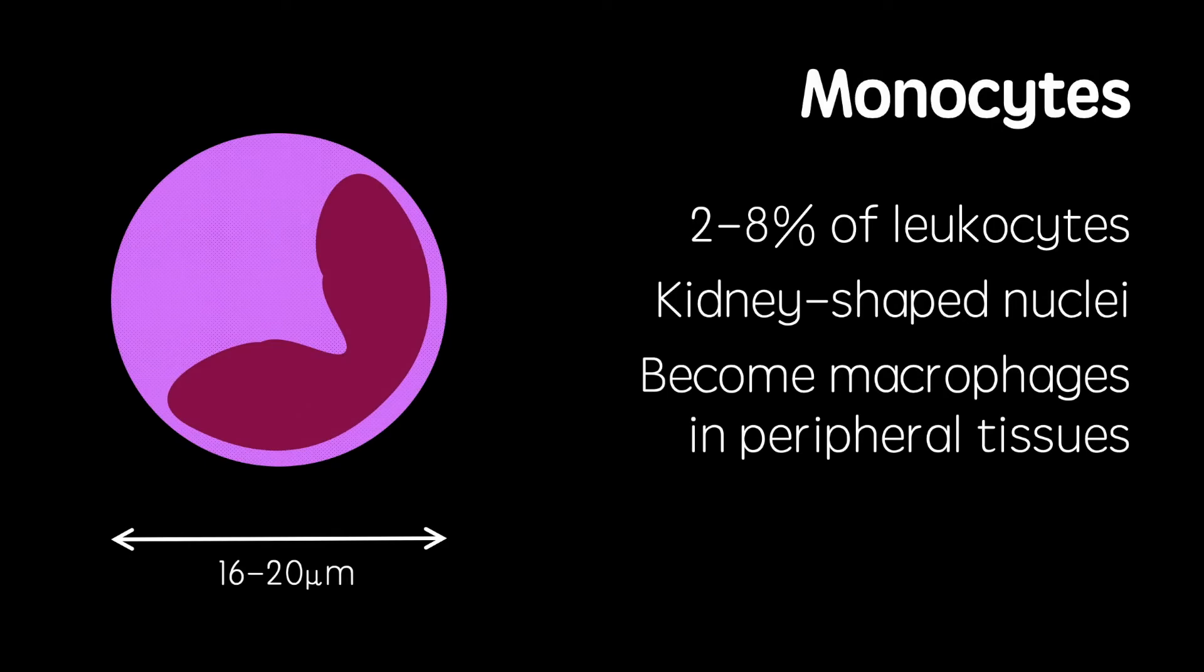The largest type of white blood cell are the monocytes which are between 16 and 20 micrometers wide. These make up 2 to 8% of white blood cells and feature kidney-shaped nuclei. Monocytes travel to peripheral tissues and become macrophages where they are tasked with engulfing foreign pathogens.